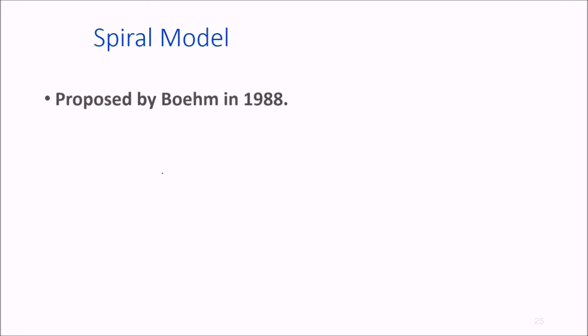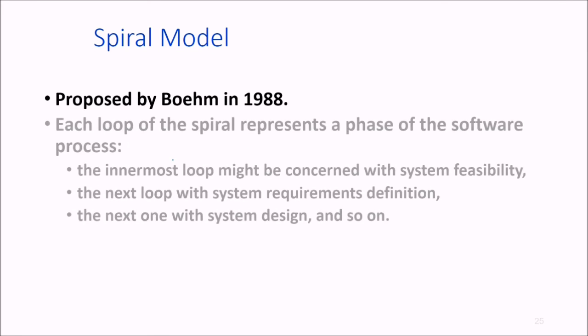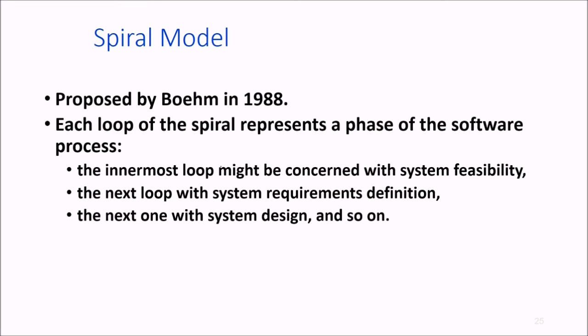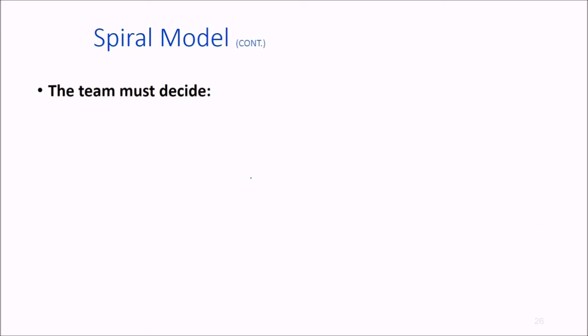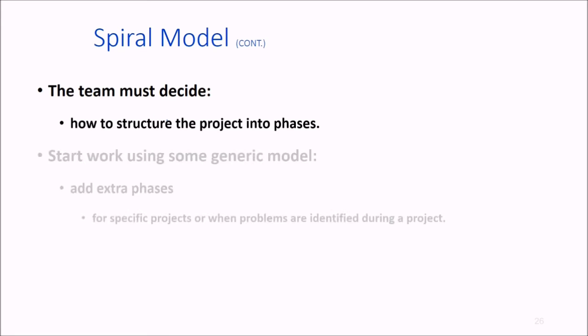Then we come to the spiral model, proposed by Boehm in 1988. Each loop of the spiral represents a phase of the software process. The innermost loop represents system feasibility, then comes software requirements definition, then system design, and so on. There are no fixed phases in this model—the phases shown are just examples. The team must decide how to structure the project into phases, which is very important, and then start with a generic model.